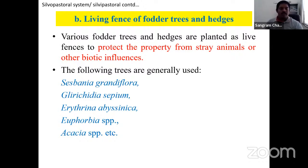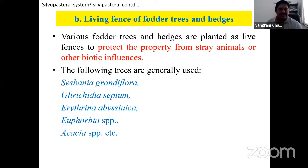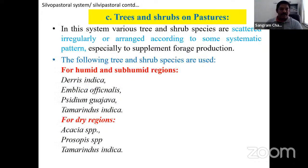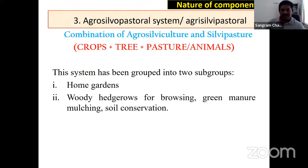In agrosilvopastoral systems, examples include: tea plus pomegranate plus coriander; or horti-pasture systems like Amla planted with fodder grasses; or apple trees in Jammu and Kashmir planted with various fodder trees. The overall examples span agrisilviculture, agrisilvipasture, silvipasture, Taungya systems, silvopastoral, and shifting cultivation. The section on agroforestry systems is now complete.